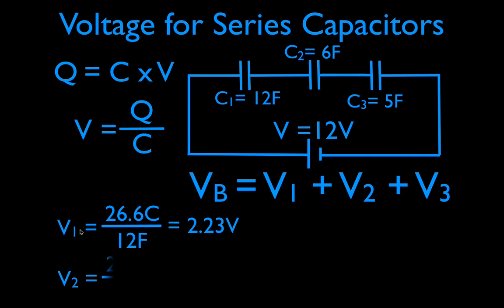Now, we're going to do the same thing for number two. Remember, we said for series capacitors, the charge is the same. So the charge Q is the same. 26.6 Coulomb divided by its capacitance, not 12, but its own capacitance. Because we want to find its own voltage drop. You get 4.4 volts.